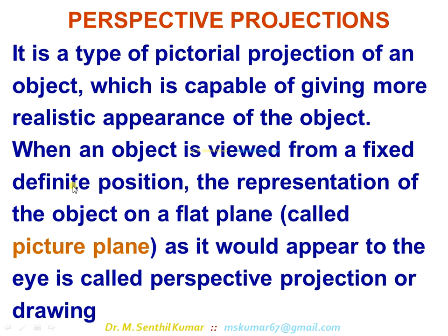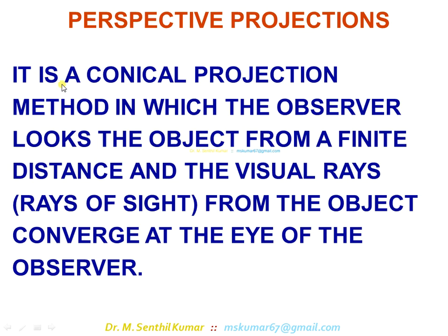Since the observer is at a definite position, the vision rays are not parallel — they converge at the eye point. So the other name for this pictorial projection is conical projection. It is a conical projection method in which the observer looks at the object from a finite distance and the visual rays from the object converge at the eye of the observer.